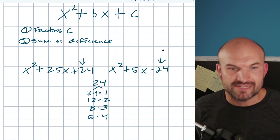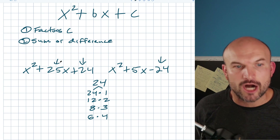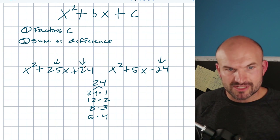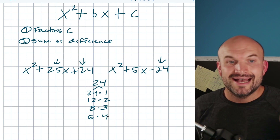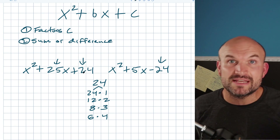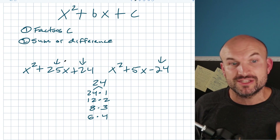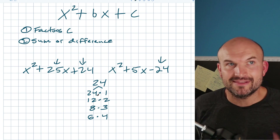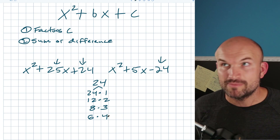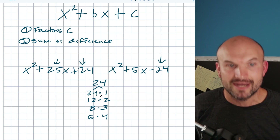My last number is positive 24, so I'm thinking about which of these factors add to give me my middle term, which in this case is 25. Six and four give me 10 — that's not it. I need 25. It's going to be 24 and 1, right? Those easily add to give us 25.